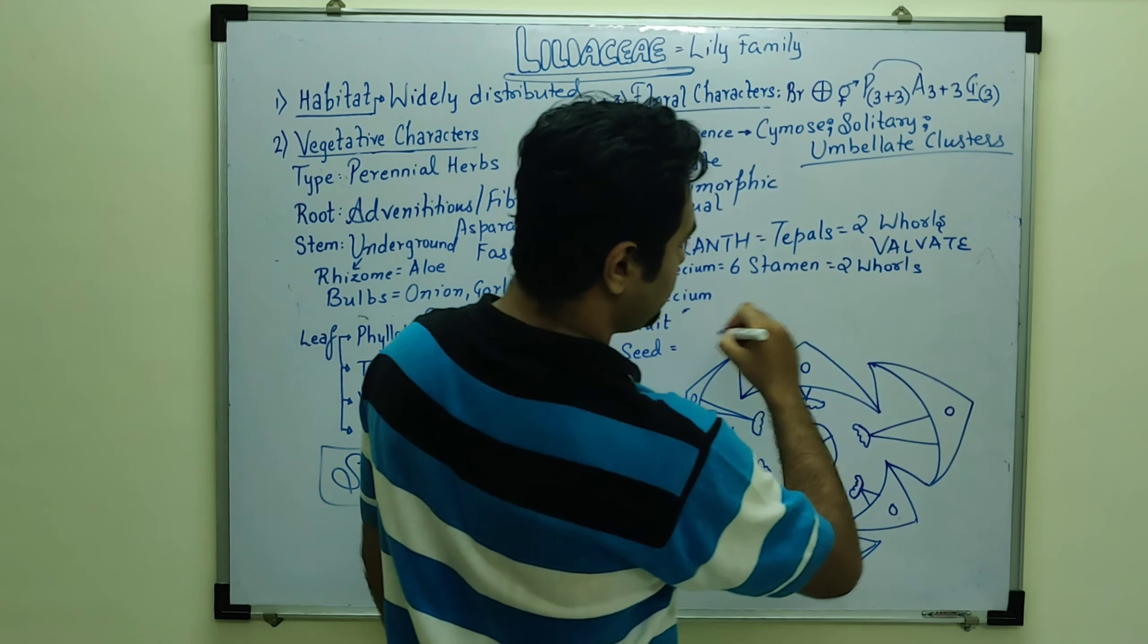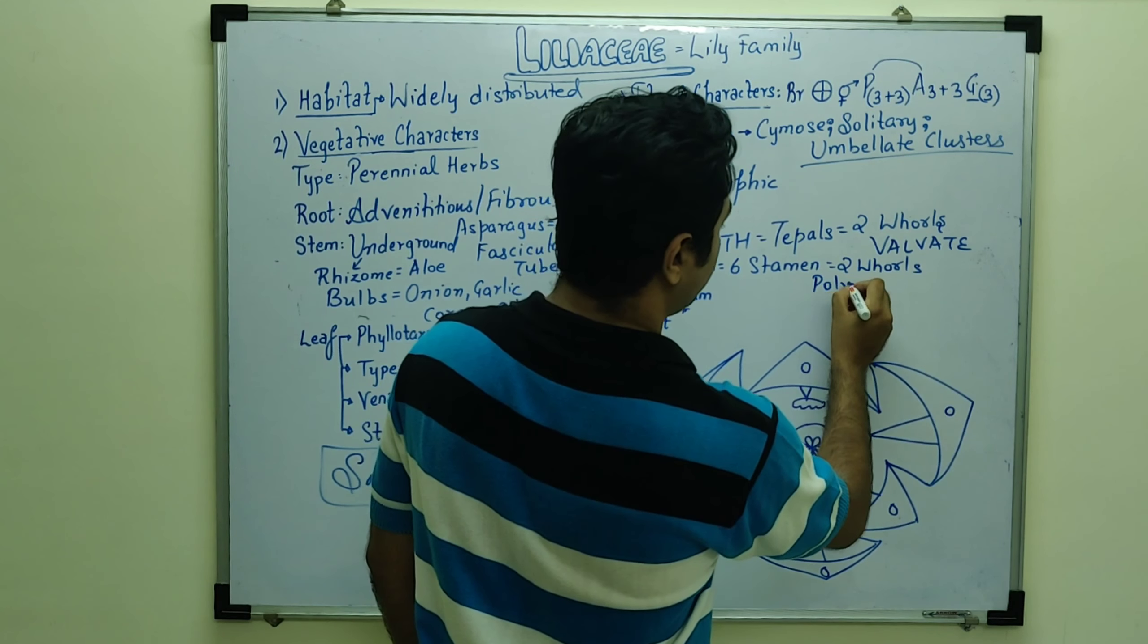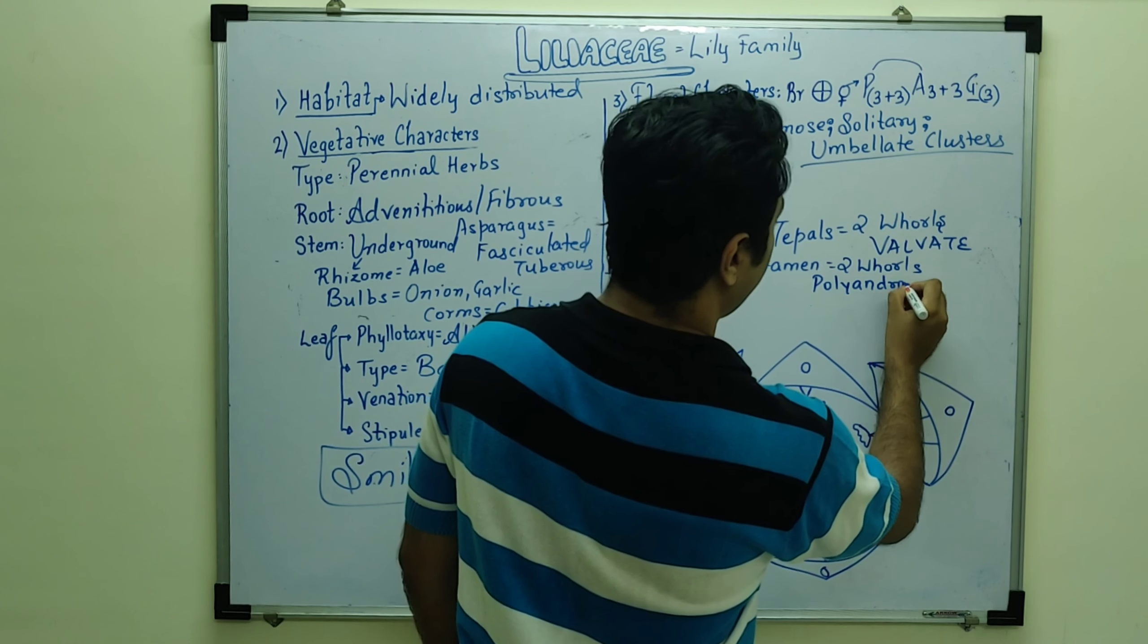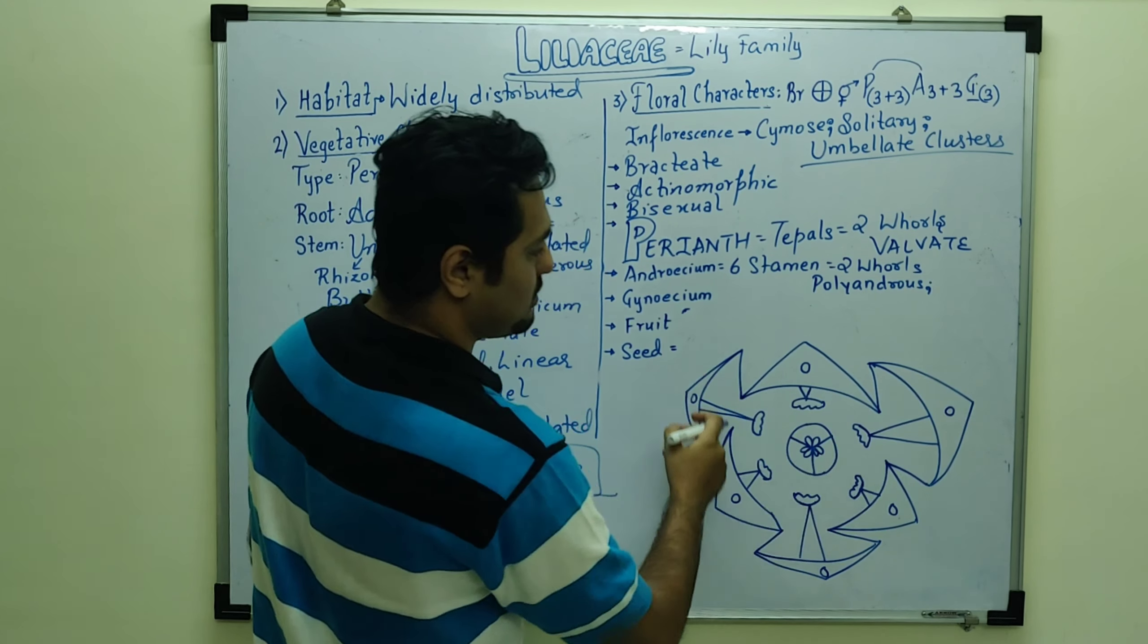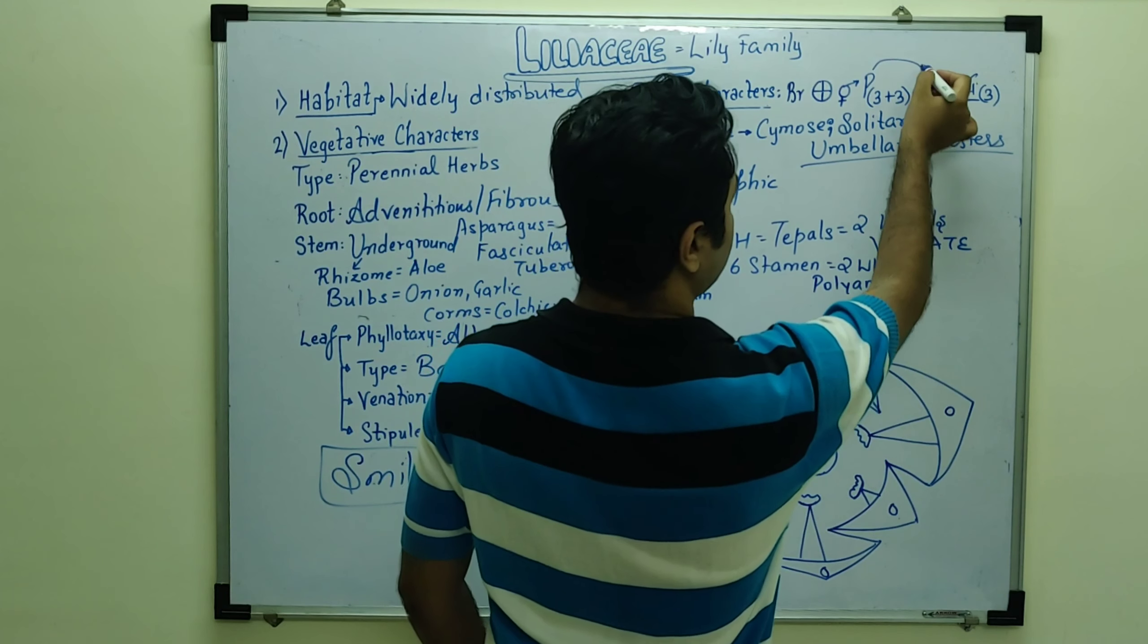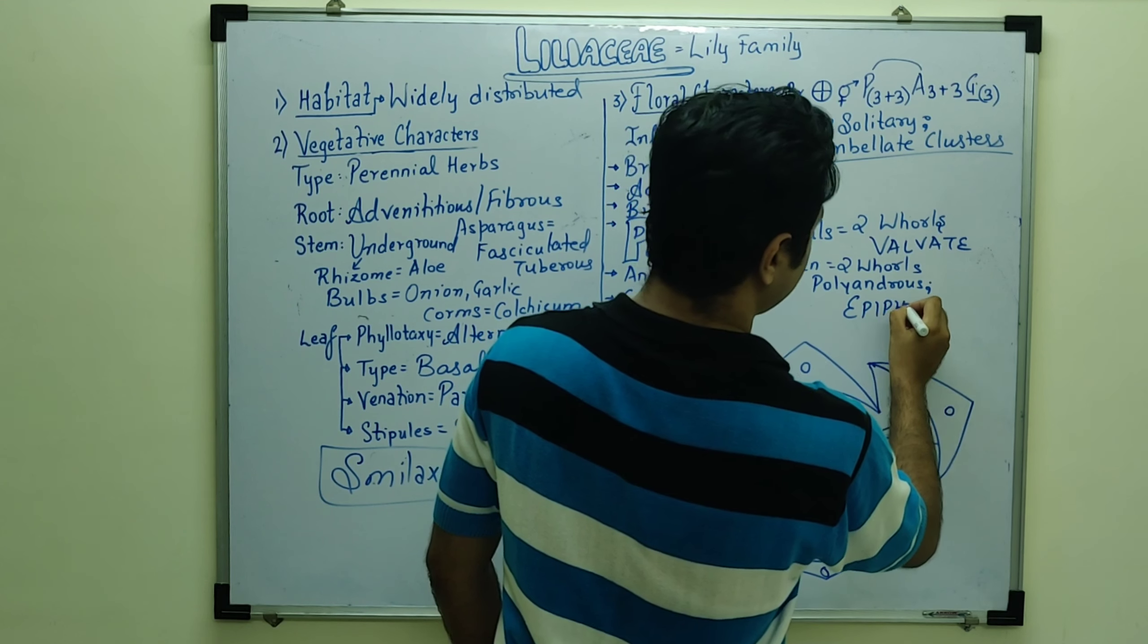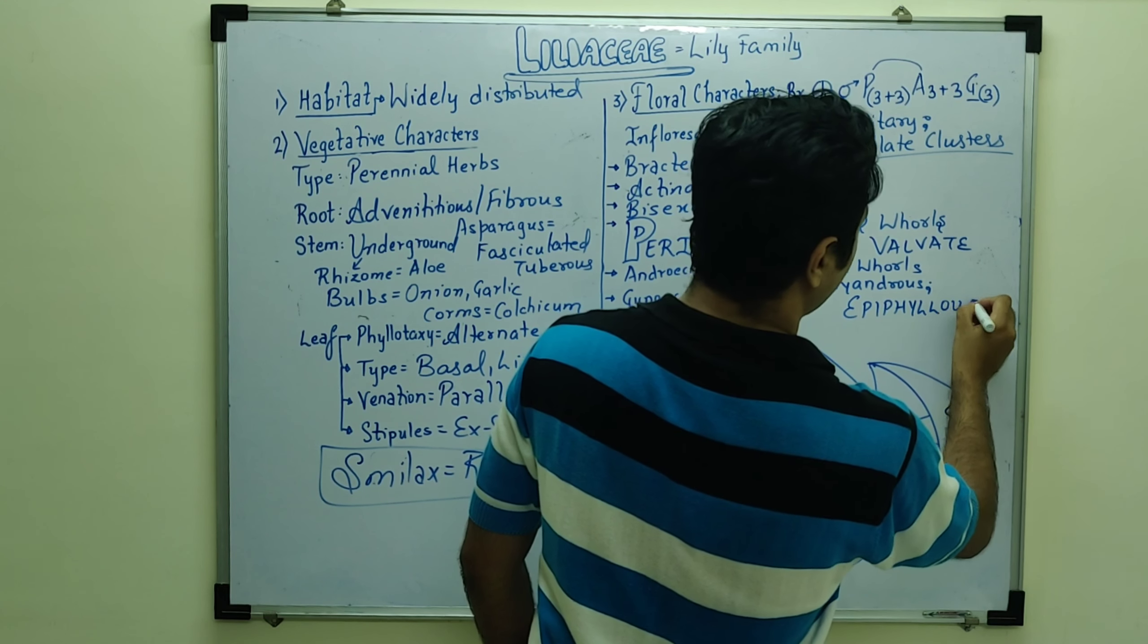Androecium 3 plus 3, I mean total 6 stamens and these 6 stamens are 3 which are from the outside and 3 stamens are from the inside. So that is also present in two whorls.